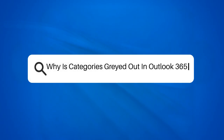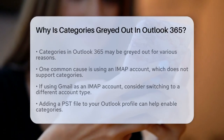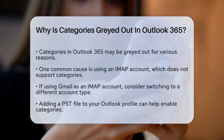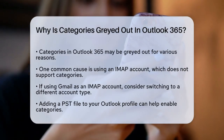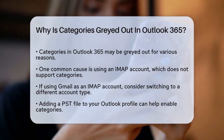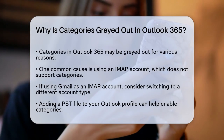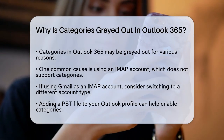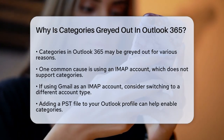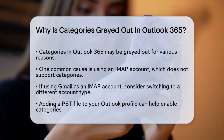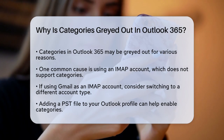Why is Categories grayed out in Outlook 365? If you're struggling to categorize your emails or calendar events in Outlook 365, and the Categories option is grayed out, you're not alone.